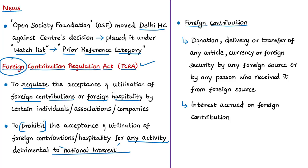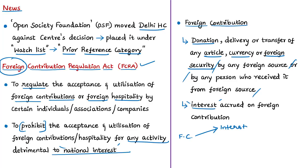Foreign contribution refers to donation, delivery, and transfer of articles, currency, or foreign security by any foreign source or by any person who has received it from a foreign source. The law also states that interest accrued on foreign contribution deposited in any bank, any other income derived from foreign contribution, and income derived from the interest of foreign contribution — all come under the definition of foreign contribution.